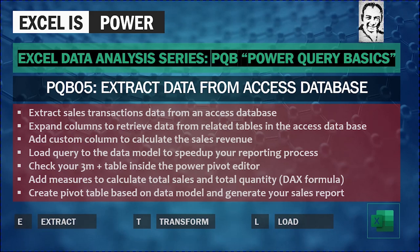Welcome to a new video from the Excel Data Analysis Series, PQB or Power Query Basics. In this video, PQB 05, we are going to see how we can extract data from an Access Database — specifically the Sales Transaction data. We will also build on the relations inside the Access Database to retrieve more data from other tables, and add a Custom Column to calculate the Sales Revenue. We will load the query into the data model instead of a normal Excel table or pivot table, and this will speed up the reporting process big time.